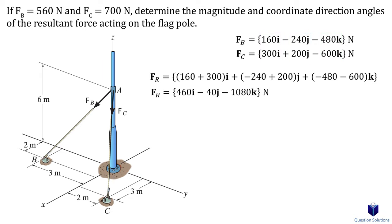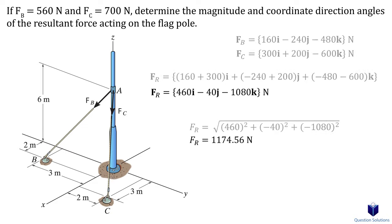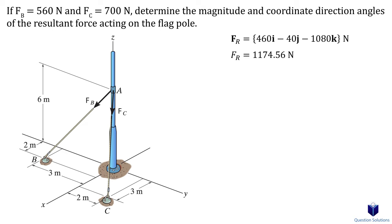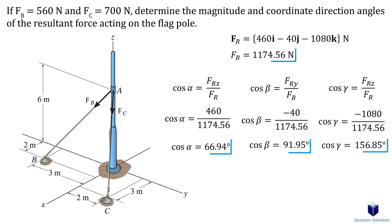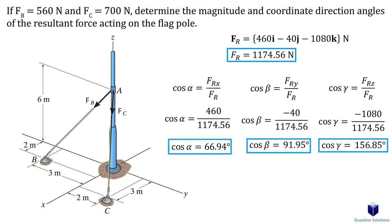The magnitude of this resultant force can be found the same way as before. To find the coordinate direction angles, we can use these equations. If we take the inverse cosine, we get our angles — those are our answers. If these equations are unfamiliar to you, please check the description for the previous video about the addition of Cartesian vectors, where I discussed them in detail.